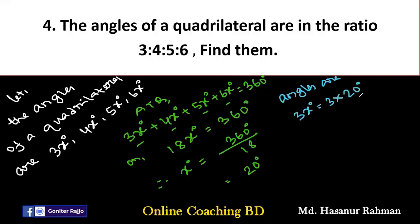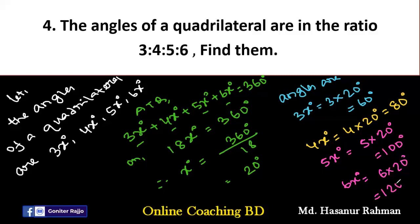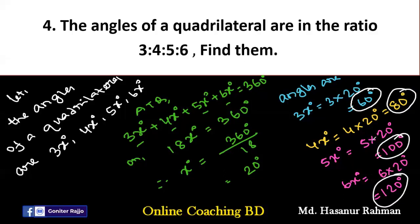3x° = 3 × 20° = 60°. 4x° = 4 × 20° = 80°. 5x° = 5 × 20° = 100°. And 6x° = 6 × 20° = 120°. Interestingly, if we add 60° + 80° + 100° + 120°, we get a total of 360°. In this way, we can easily solve number 4.